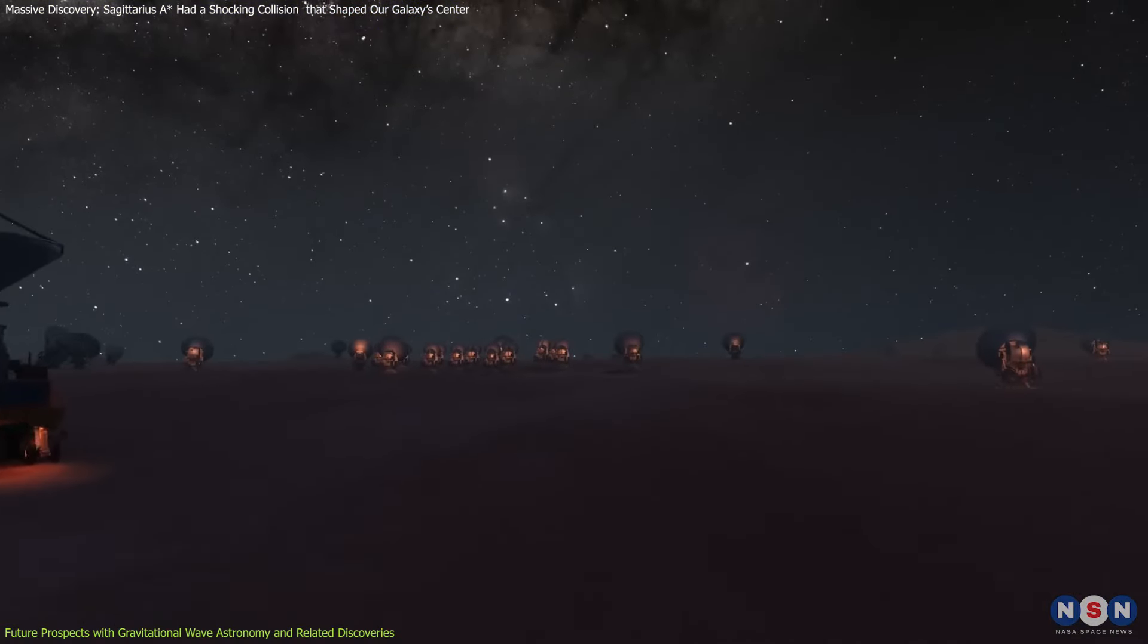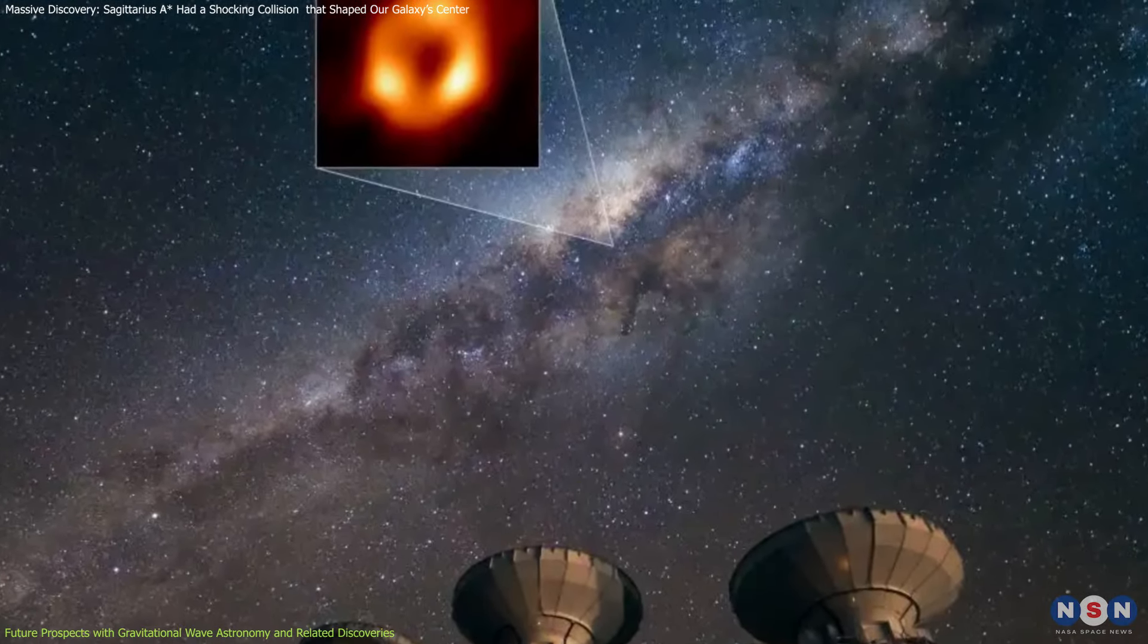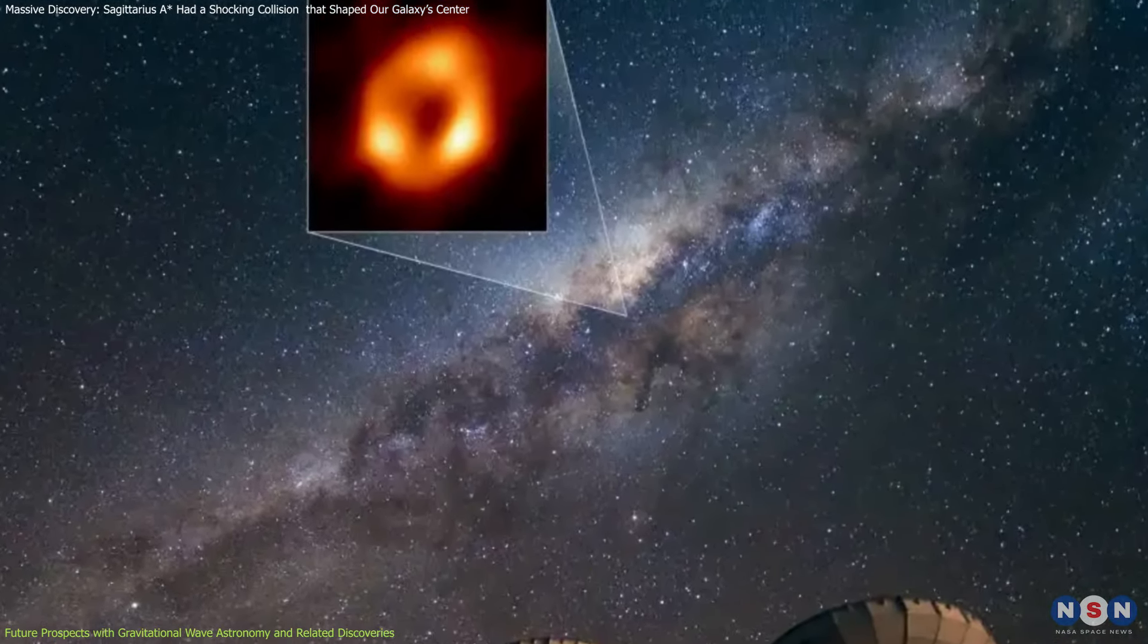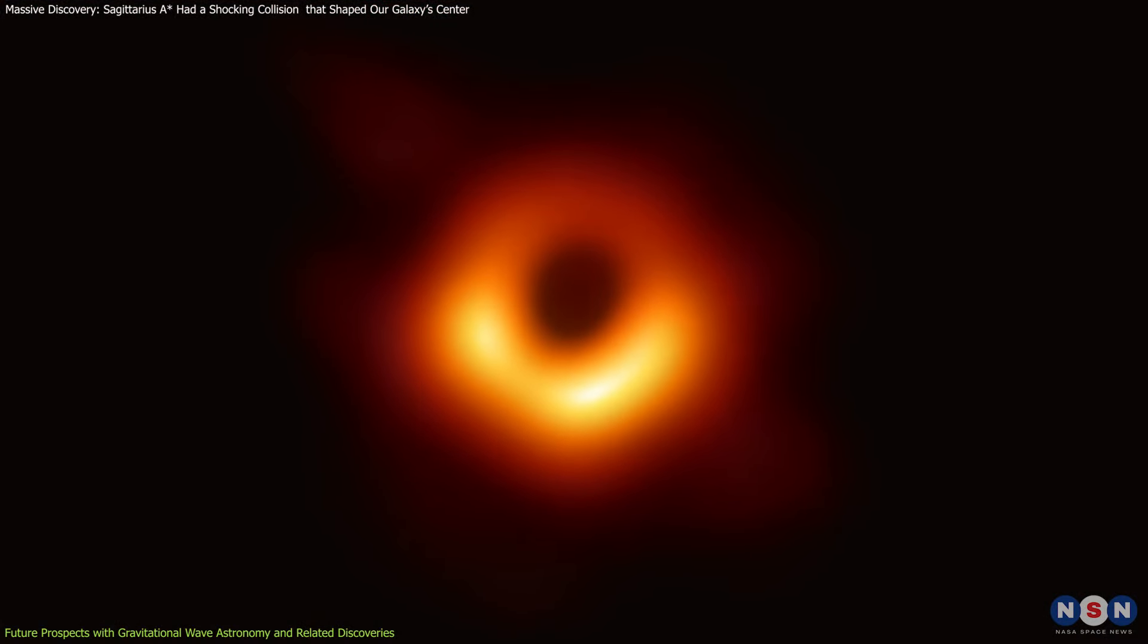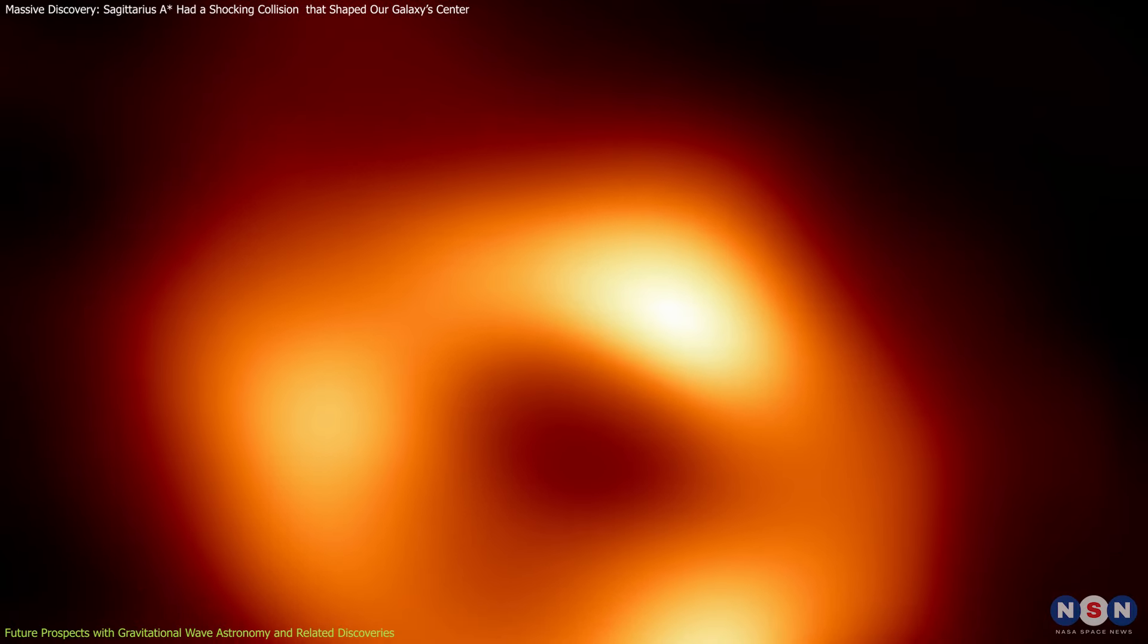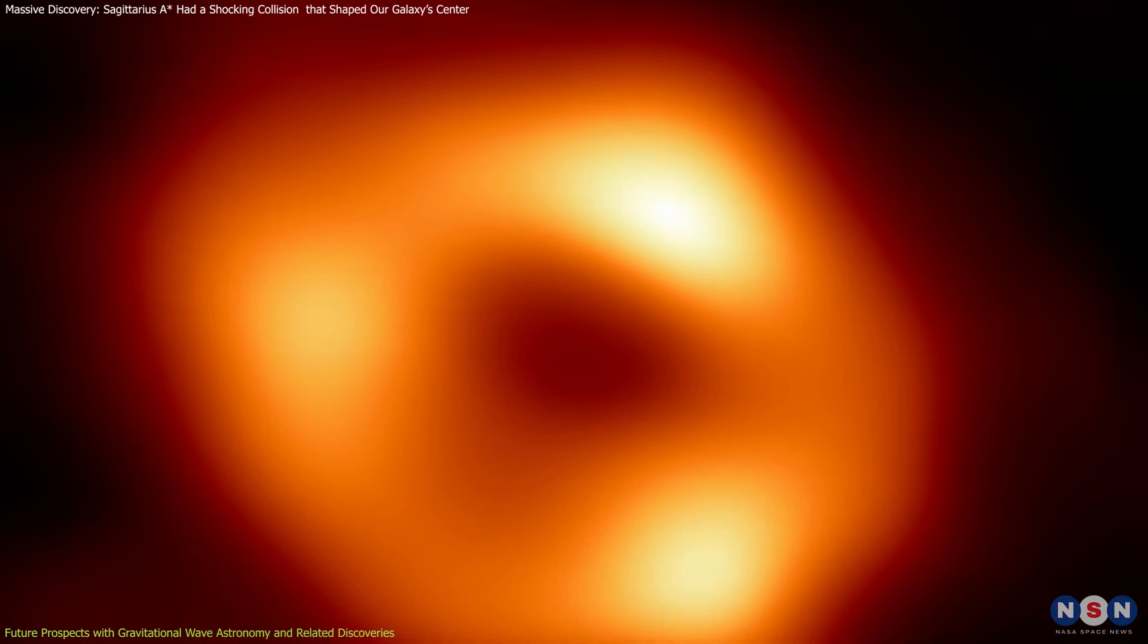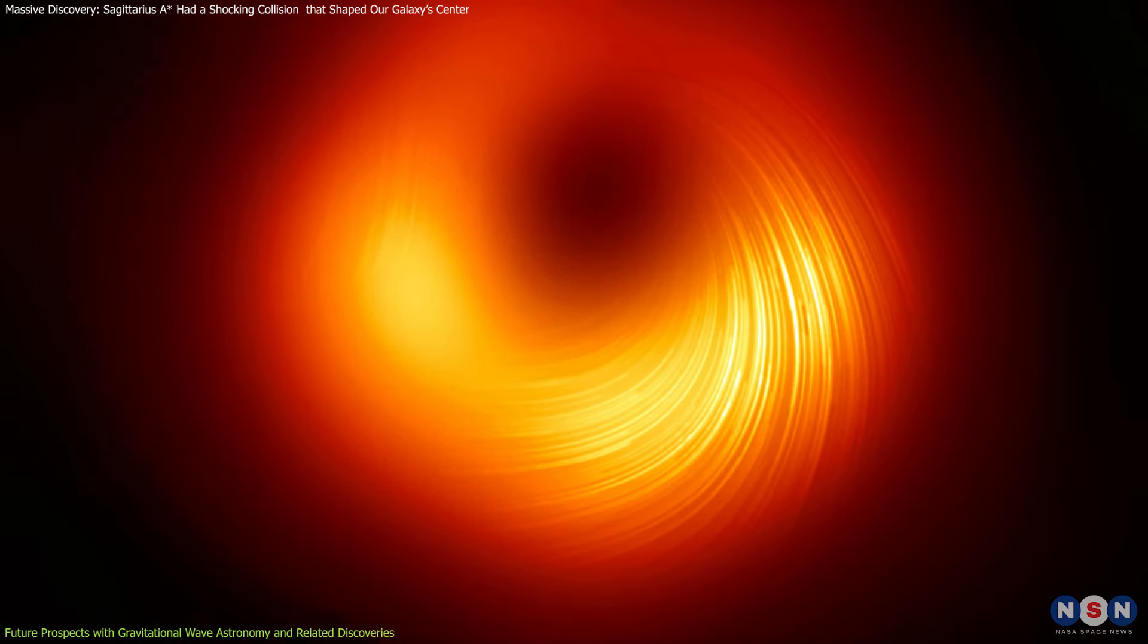The recent advancements with the Event Horizon Telescope will complement these efforts by enhancing our ability to directly image black hole environments with unprecedented clarity. In recent test observations, the EHT achieved a higher resolution by operating at a shorter wavelength of 0.87 mm, compared to the 1.33 mm used for the original images of Sagittarius A-star and M87 star.